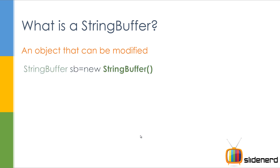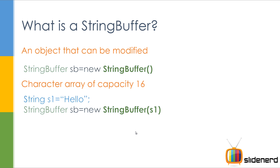You make a String Buffer by saying: StringBuffer sb = new StringBuffer(). This is one of the default constructors — there is no text inside, it's an empty String Buffer. Internally, a character array of size 16 is created inside your JVM when you write this statement. You can also create a String Buffer from a String like this: String s1 = "hello", then StringBuffer sb = new StringBuffer(s1), passing s1 inside the String Buffer constructor.